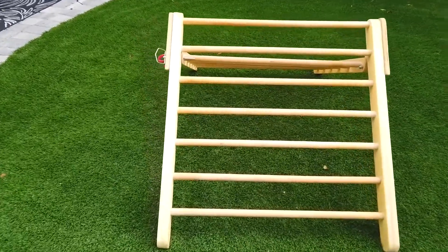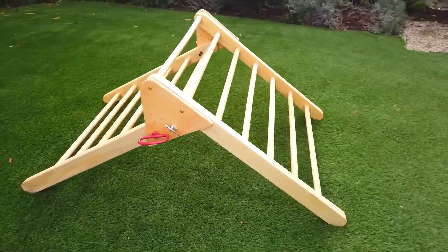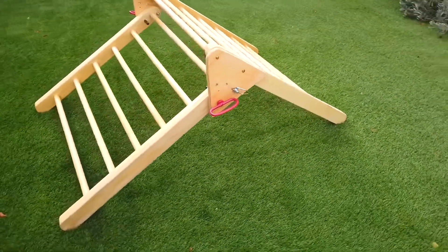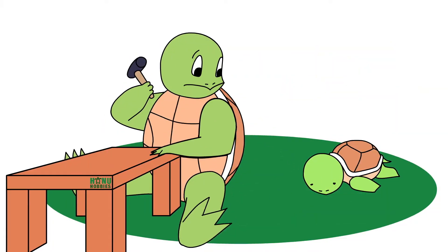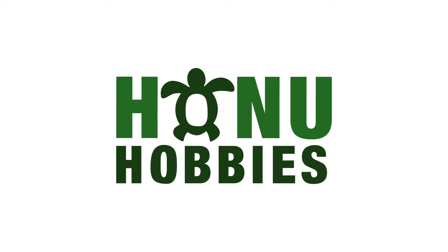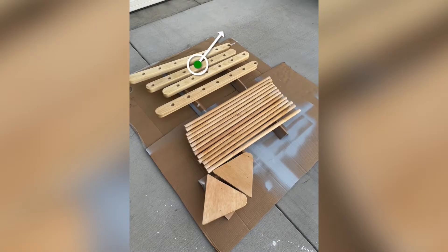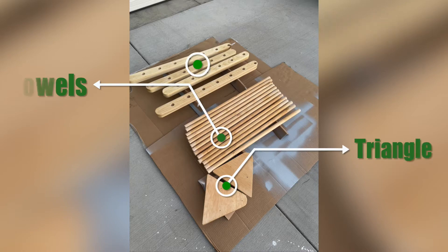For this project, we're going to break down the steps to make a Pikler triangle. This is famous for babies and toddlers' motor development, so let's do this. This project has three main components: the rails, the dowels, and the triangle. We wanted to give a visualization before we break down each step.